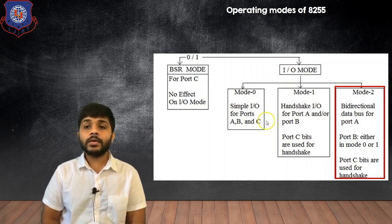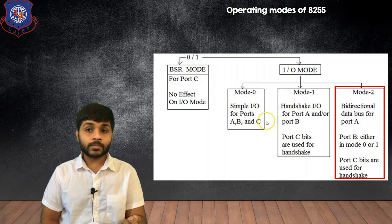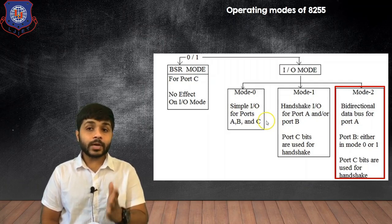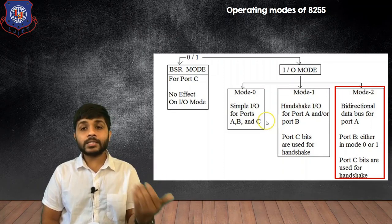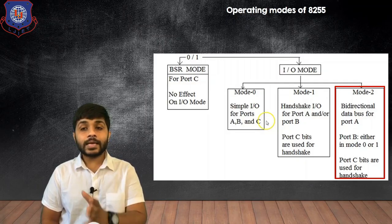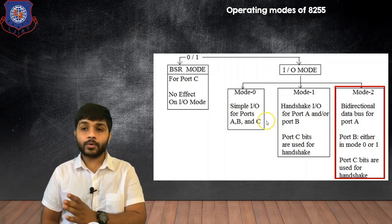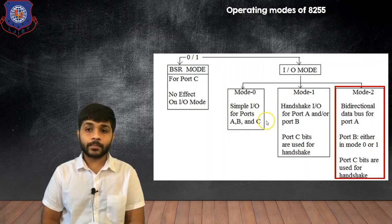The last mode is Mode 2. In Mode 2, Port A can be used as a bidirectional port, meaning Port A can be used as input and output at the same time. In Mode 0 and Mode 1, ports can only work as either input or output, but in Mode 2, Port A can be set as both input and output. In Mode 2, Port B can work as Mode 0 or Mode 1, and Port C is used for handshake.